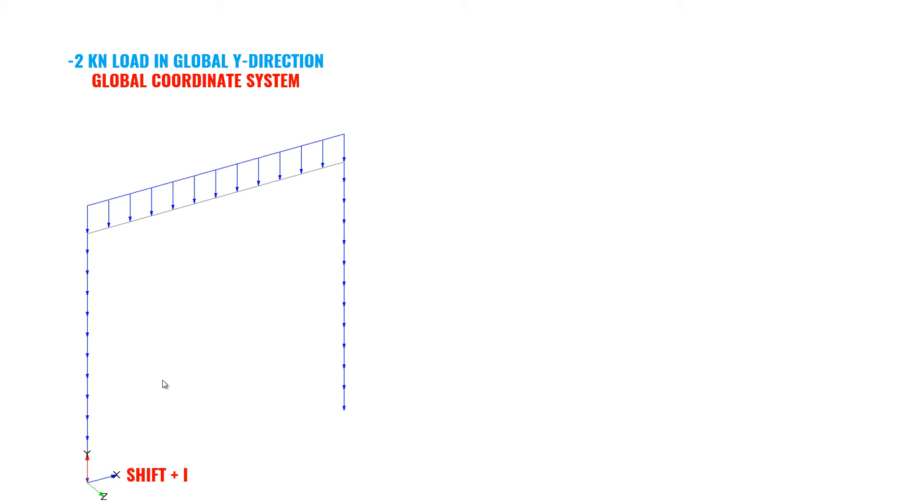So what happens? The load will be acting downwards. And you can see when I give 2kN load in global y-direction, all the load is acting downwards for all the members.